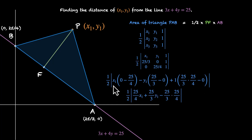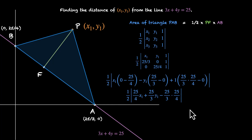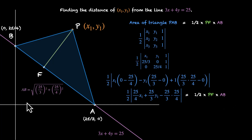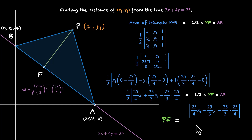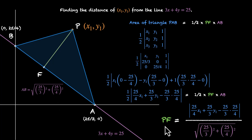Simplifying, we have half times [minus 25x1/4 minus 25y1/3 plus 25 times 25/(3 times 4)]. Taking the negative sign out gives us plus, plus, and minus — so x1 and y1 have positive signs. This is our area of triangle, equal to half times PF times AB. The length AB equals the square root of (25/3) squared plus (25/4) squared. Plugging in and canceling, PF equals the expression in the numerator divided by the length AB. This is the distance between any point x1, y1 and the line 3x plus 4y equals 25.